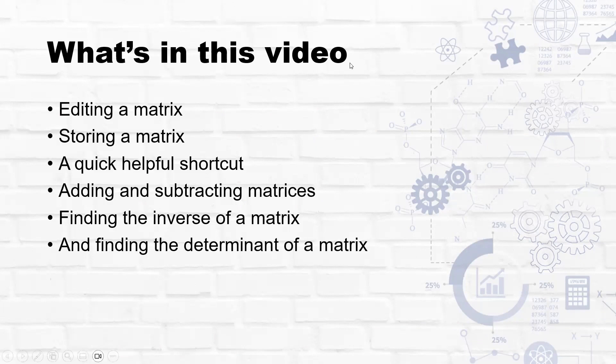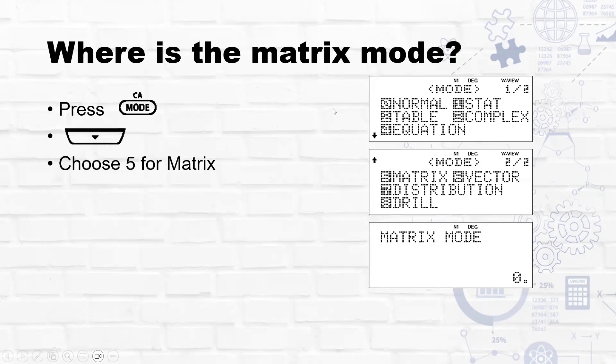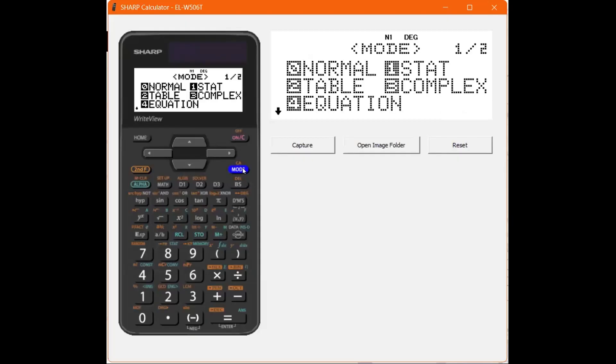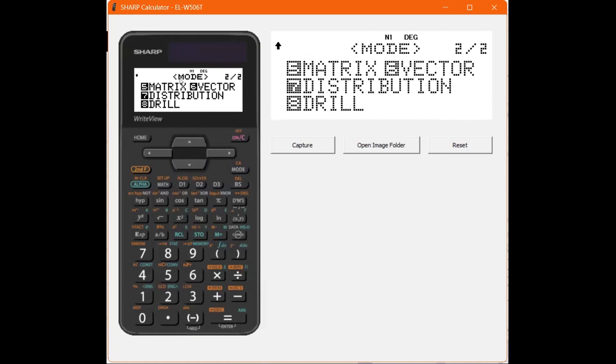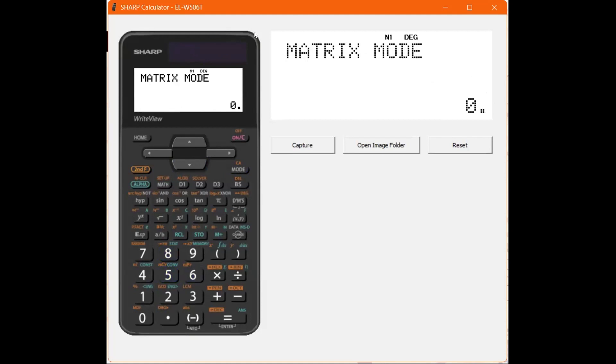So step one, first we need to get into our matrix mode on our SHARP calculator. So to do that, I'm going to grab my calculator, and what I'll do is press mode, and if you scroll down, you'll see that you have a matrix option as number five, and you'll just select five for matrix mode.